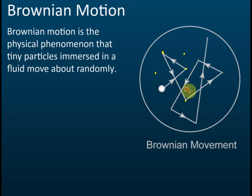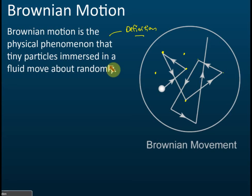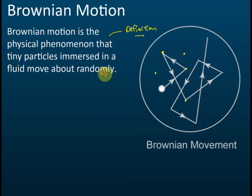What you need to know about Brownian motion in SPM Chemistry: first, it is one of the proofs of the particle theory of matter. Second, you need to know the definition — in the exam they will ask you to define Brownian motion. Third, you need to know what types of particles can be used in experiments to observe Brownian motion.